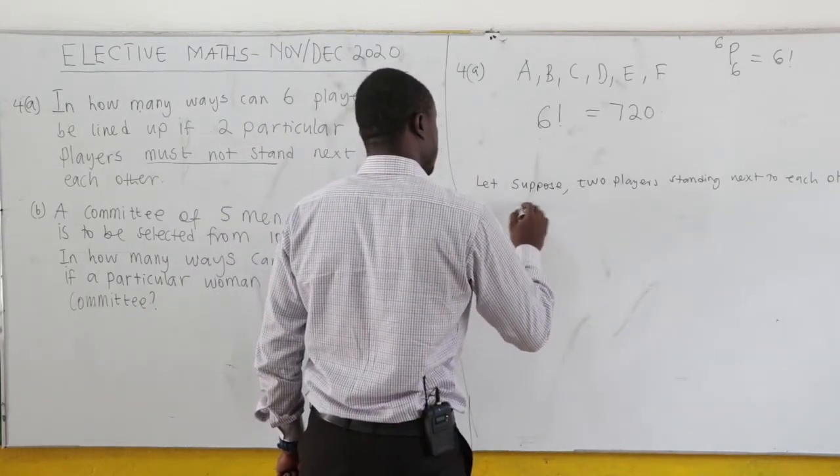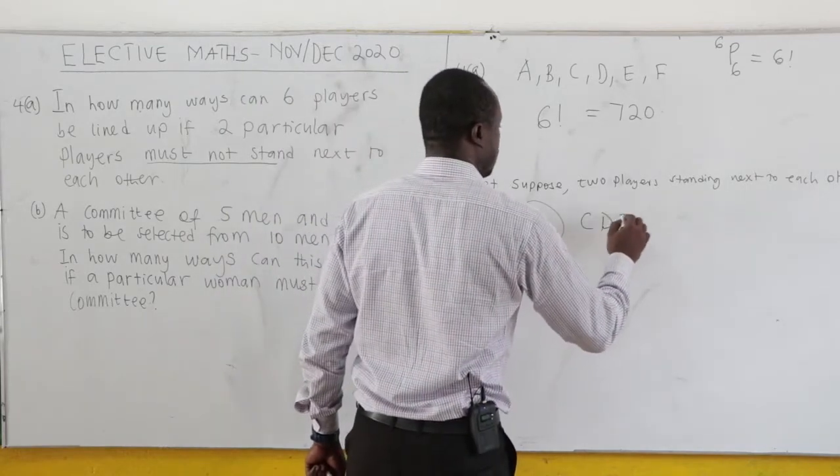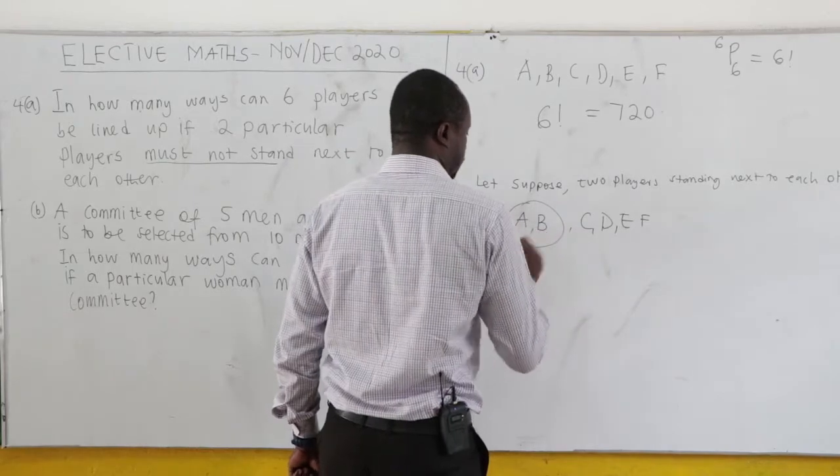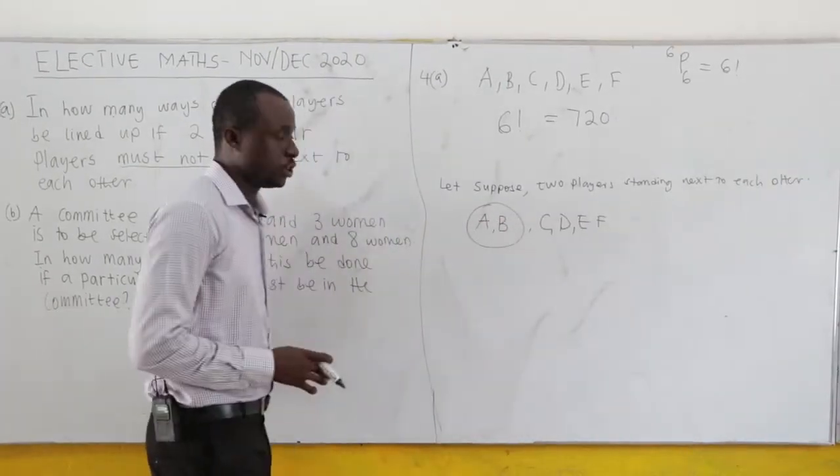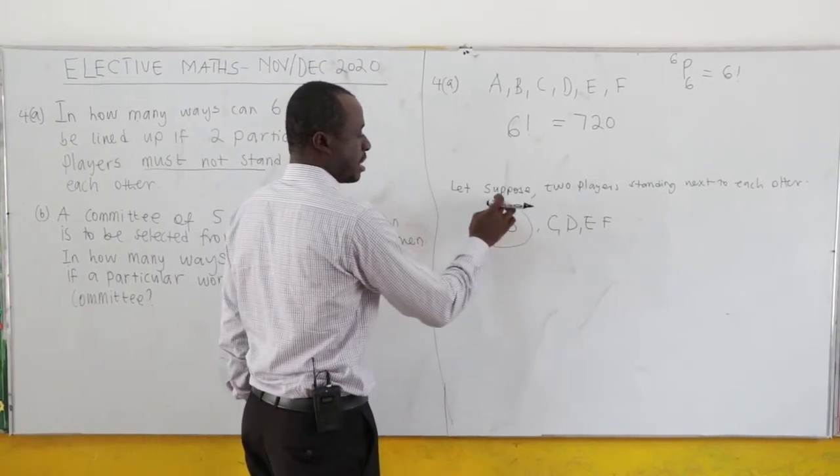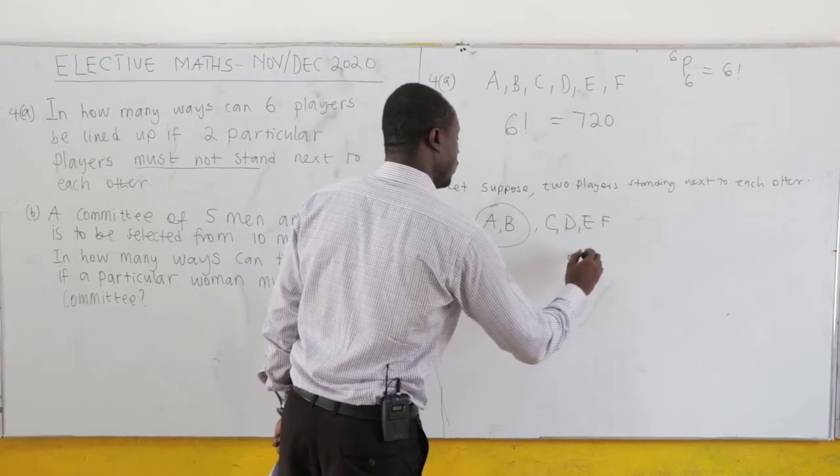So if you have A, B standing next to each other, now they have C, D, E, F. Now, how many ways can we arrange all this? Now this is 1. So this is considered as 1. So 1, 2, 3, 4, 5. And that will be 5 factorial.